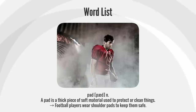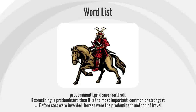A pad is a thick piece of soft material used to protect or clean things. Football players wear shoulder pads to keep them safe.